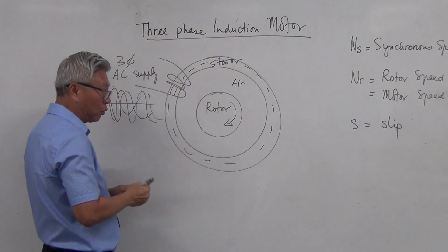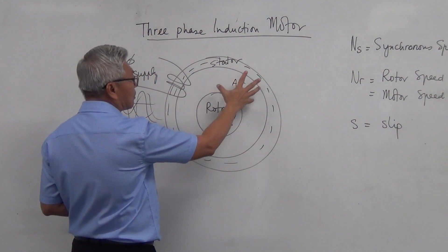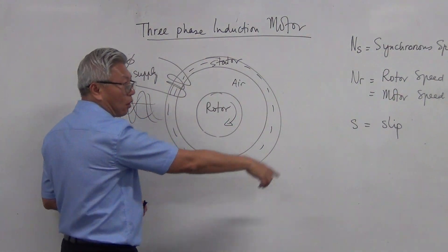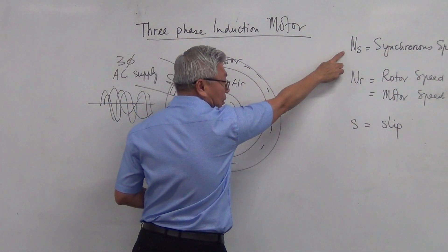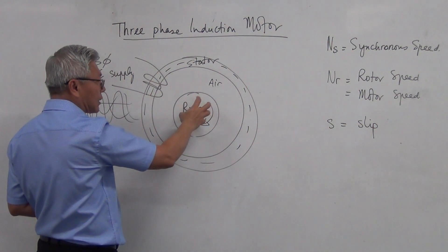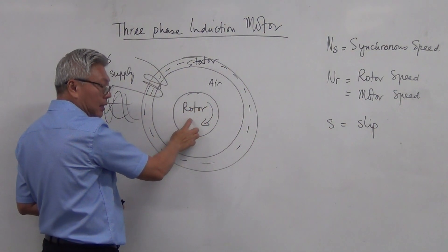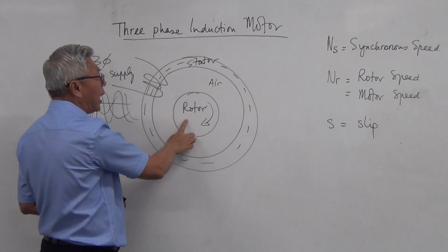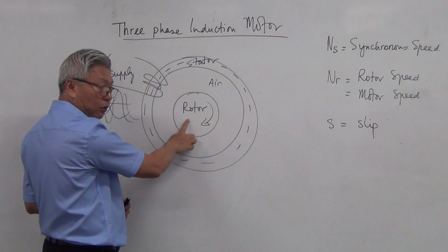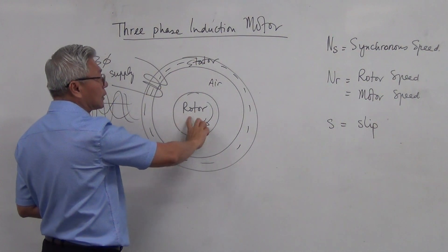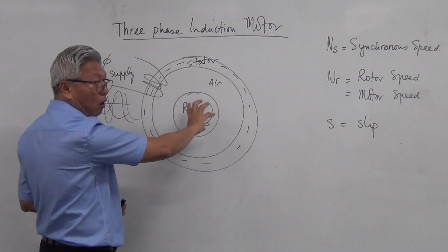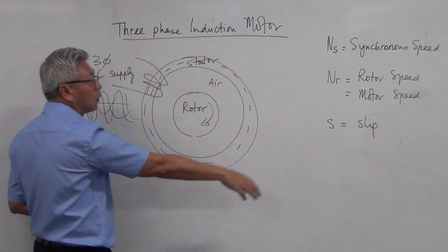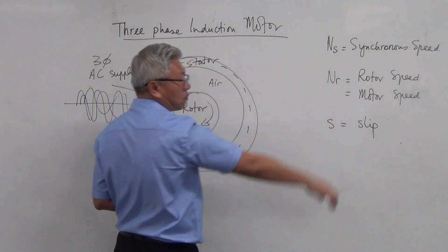The magnetic flux will reach the rotor. And this moving magnetic flux, the speed of this moving magnetic flux is called synchronous speed. And the moving magnetic flux cuts the conductor in the rotor. And voltage is induced in the rotor. And therefore, current is flowing in the rotor. And current conducted with the magnetic flux, law of magnetism would make the rotor turn. And the speed of the rotor, we call it the rotor speed or the motor speed.